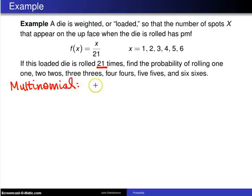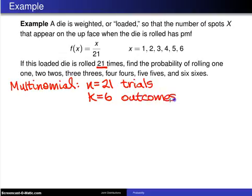The reason it is the multinomial is there are 21 different trials, so n equals 21 trials, but those trials are not Bernoulli trials. They don't have two different outcomes, rather they have six different outcomes. So k is equal to six different possible outcomes on each of the trials.